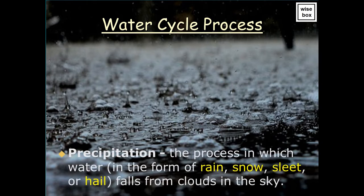Precipitation is the process in which water, in the form of rain, snow, sleet, or hail, falls from clouds in the sky.